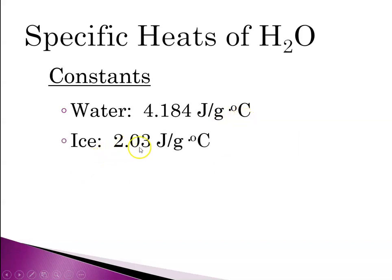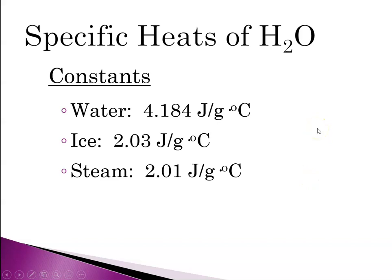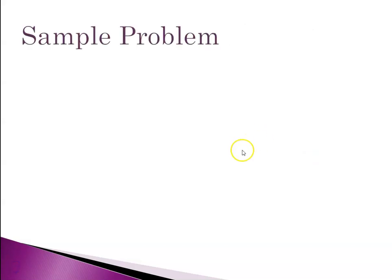For liquid water at room temperature, it takes 4.184 joules per gram degree C. For ice it's 2.03 J/g°C, and for steam it's 2.01 J/g°C. Ice and steam have specific heats of roughly 2 J/g°C, while liquid water is about 4 J/g°C — meaning it takes twice as much energy to change the temperature of liquid water as it does for ice or steam. This matters for us: if water had a very low specific heat capacity, and we walked outside on a hot sunny day, our blood would probably boil. The fact that water has a high specific heat capacity — and we are predominantly made of water — is a good thing.